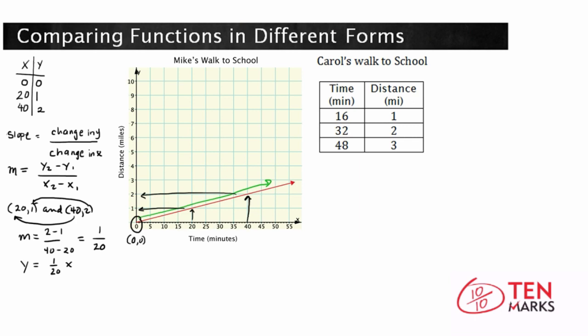Now let's take a look at Carroll's walk to school, and we'll do the same thing. We already have the table of values, so let's calculate the slope of Carroll's walk, or the slope of the line that represents Carroll's walk. Slope, again, can be represented by the change in y divided by the change in x, and that can be calculated using our ordered pairs,